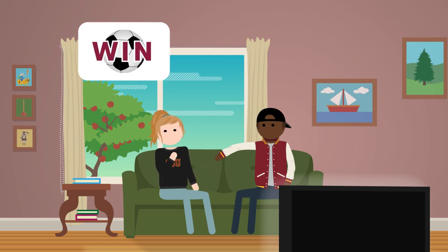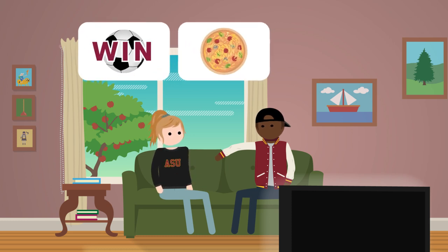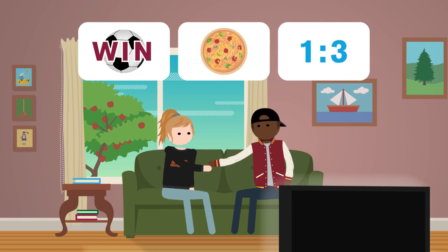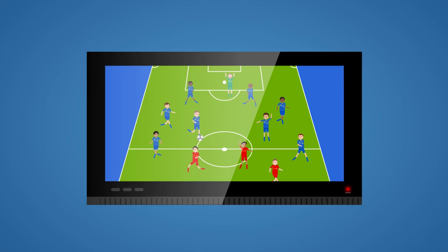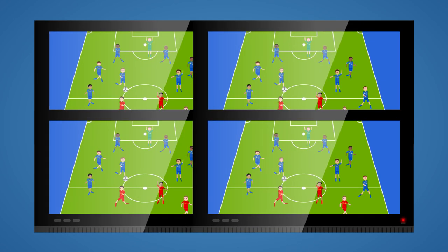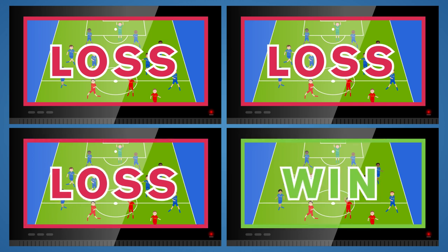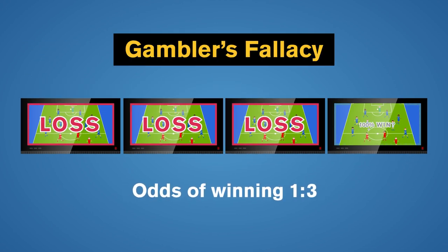Don't let your enthusiasm lead you into a gambler's fallacy. Say you bet your friend that your favorite soccer team will win today's game—loser buys pizza. The sports analysts say that the odds, or relative probabilities, are 1-3 that they will win. All that means is that in a hypothetical world where we could replay this same game over and over again, your team is expected to win once for every three times they lose. But what if they've already lost three games in a row? It might be tempting to think that they're due for a win. Unfortunately, that isn't how odds work. How many times in a row they've won or lost doesn't affect whatever happens in the next game, and the odds change each game.